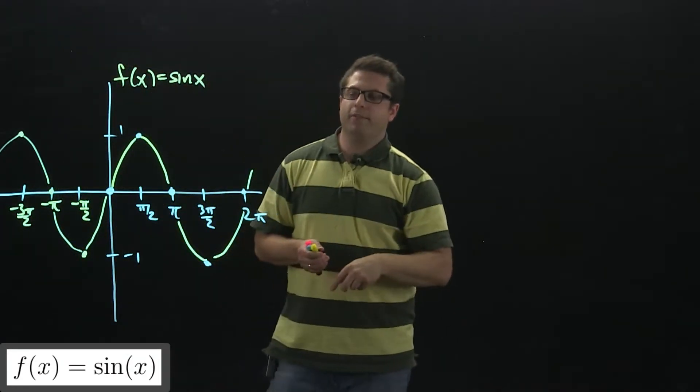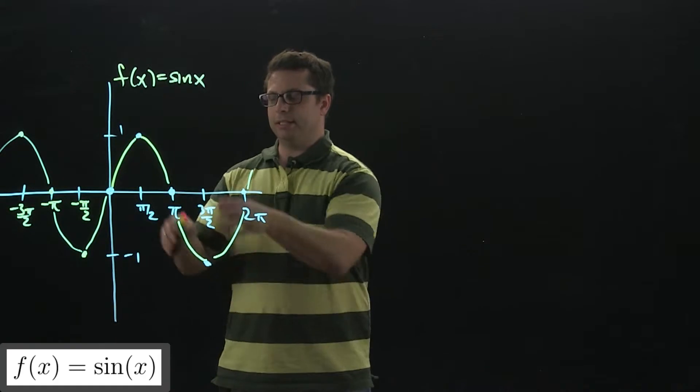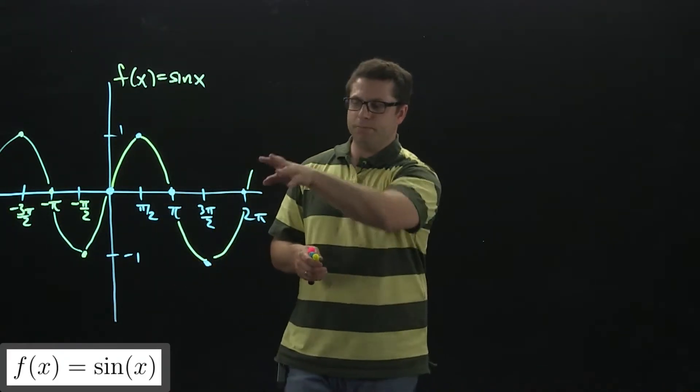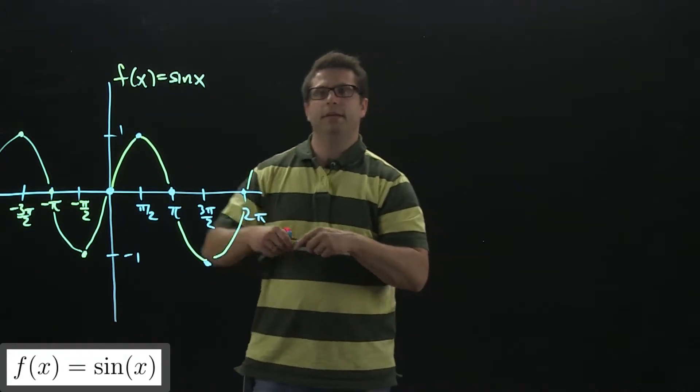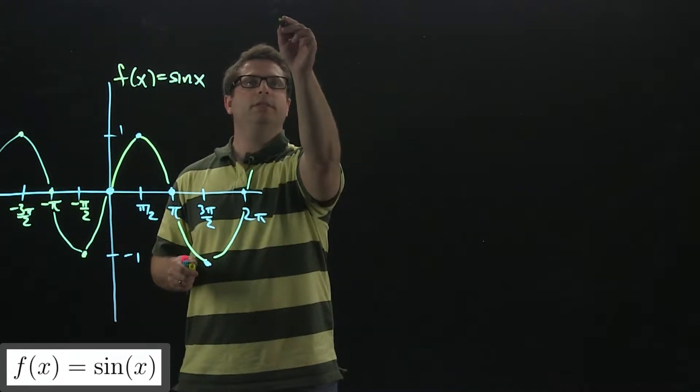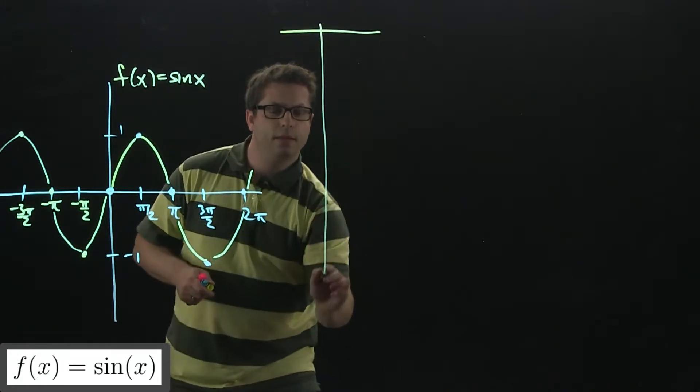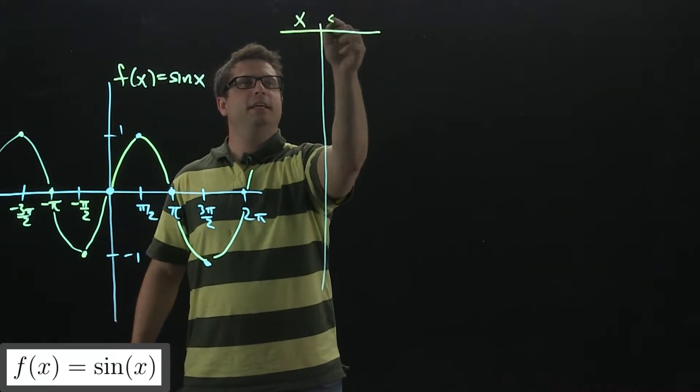The way that we graph the derivative based on the graph of the original function is we take a look at the slopes at various points on sine of x. I'm going to make a little table up here, where I'm going to have the x and then the slope.